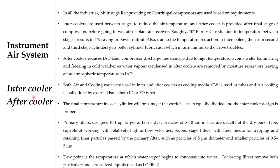Now we can see about the intercooler and aftercooler. In all the industries, multi-stage reciprocating or centrifugal compressors are used based on requirements. Intercoolers are used between stages to reduce the air temperature, and an aftercooler is provided after the final stage of compression, before going to the wet air or plant air receiver. A roughly 10°F (5°C) reduction in temperature between stages results in 1% saving in power output. Also, due to temperature reduction in intercoolers, the air in the second and third stage cylinders gets better cylinder lubrication, which in turn minimizes wear trouble.